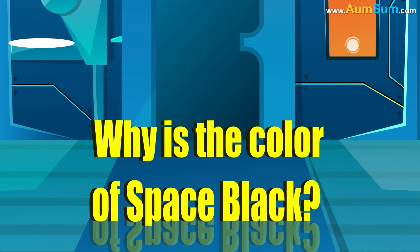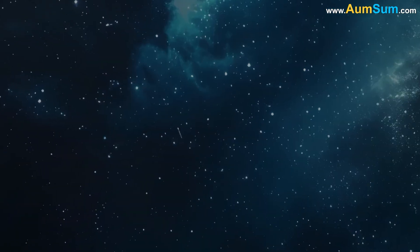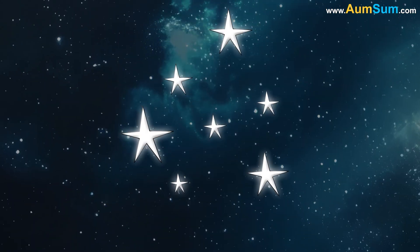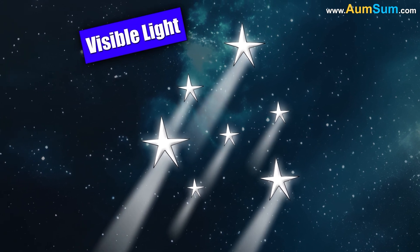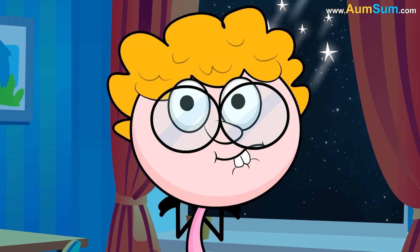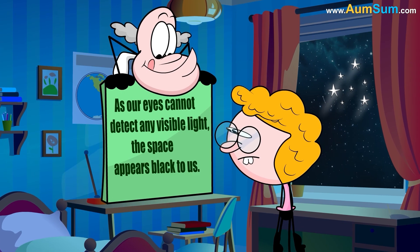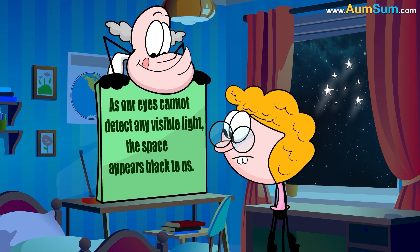Why is the color of space black? According to a study, the space appears black because the universe is expanding. This expansion is causing the visible light emitted by the stars to stretch out so much that when it reaches our eyes, they cannot detect it. As our eyes cannot detect any visible light, the space appears black to us.